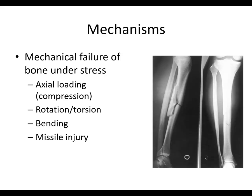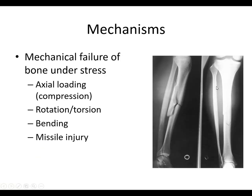What about mechanisms? A fracture occurs when there is mechanical failure of the bone under stress. This could be axial loading or compression, rotation or torsional injury, bending injury, or a missile-type injury. A fracture can occur with any of these mechanisms — for example, here we see a bending-type injury with a butterfly fragment.